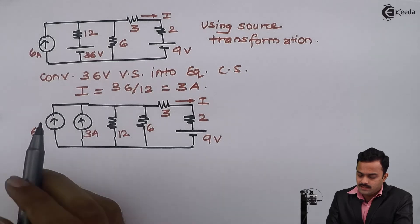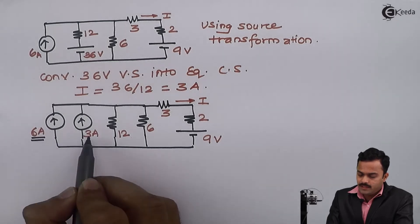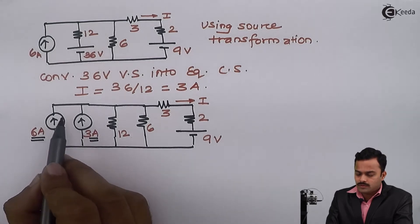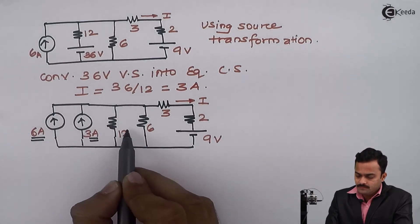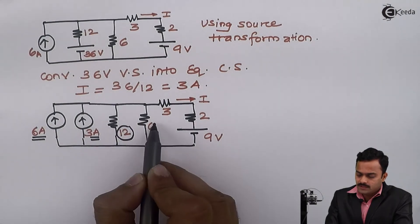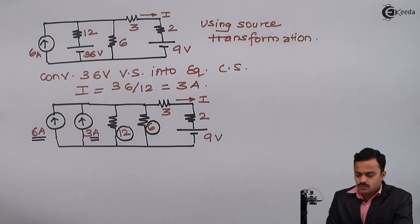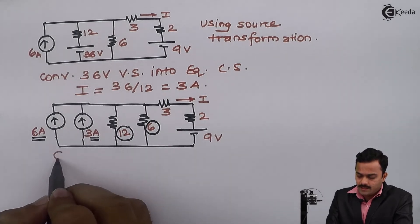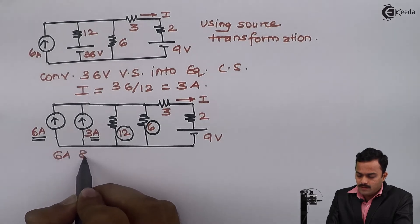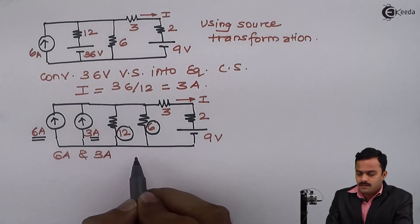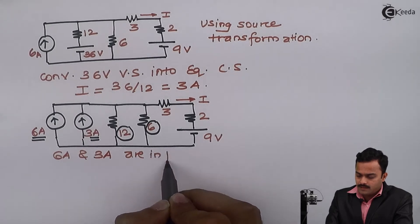As we have discussed, here 6 amperes and 3 amperes are in parallel, both having the same direction, so the resultant will be 9 amperes. The 12 ohm resistors are also in parallel, so we need to find the resultant.